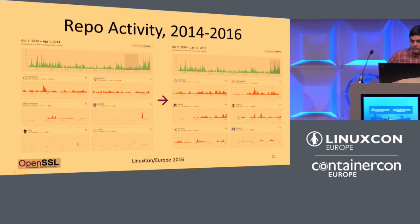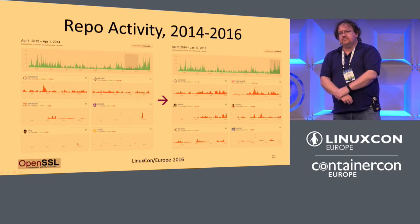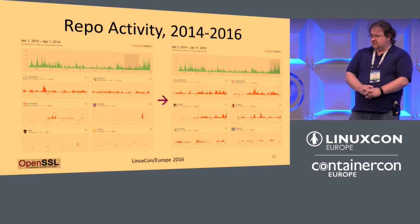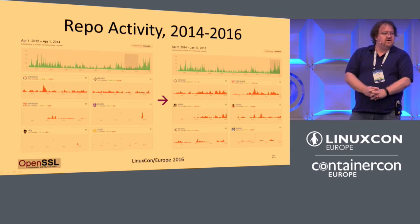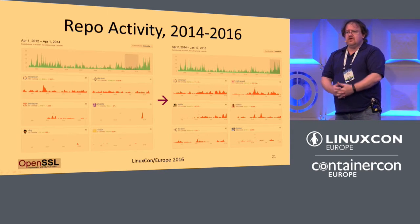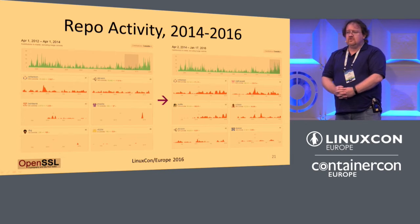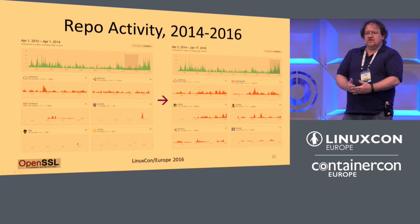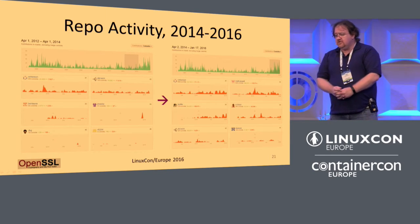Looking at the lead-up to Heartbleed on the left-hand side versus activity leading up until the beginning of this year on the right-hand side, you can see that the mix of committers has changed. New faces appear as major committers. There's more committing going on by different people, more review, more interaction, and more of a sense of community. Not only is the project team itself doing more work because there are more people — the community interaction is radically increased. The dialogue, the feel of the project team and community of users has radically altered.